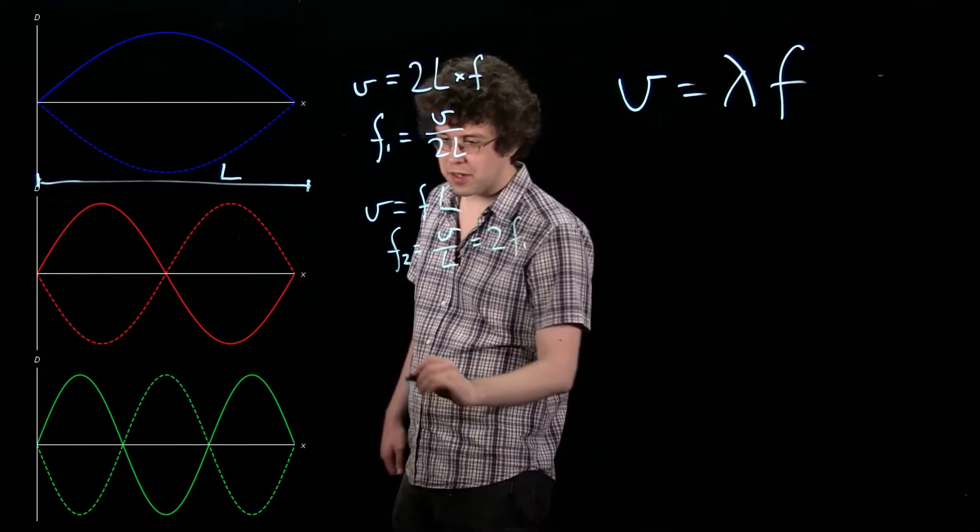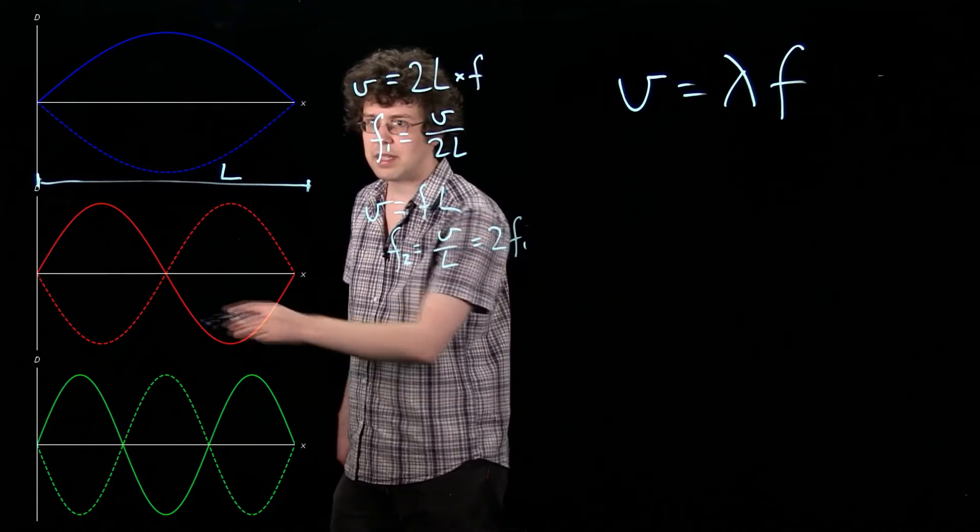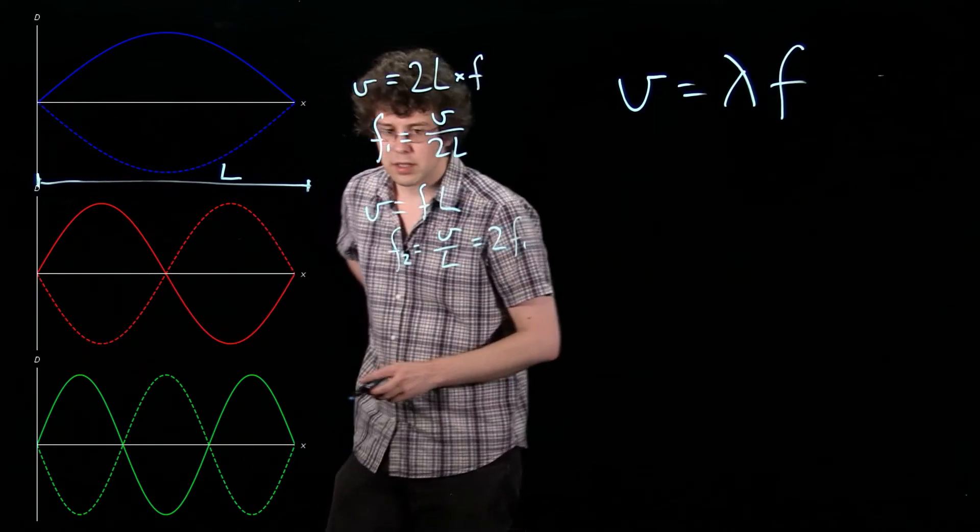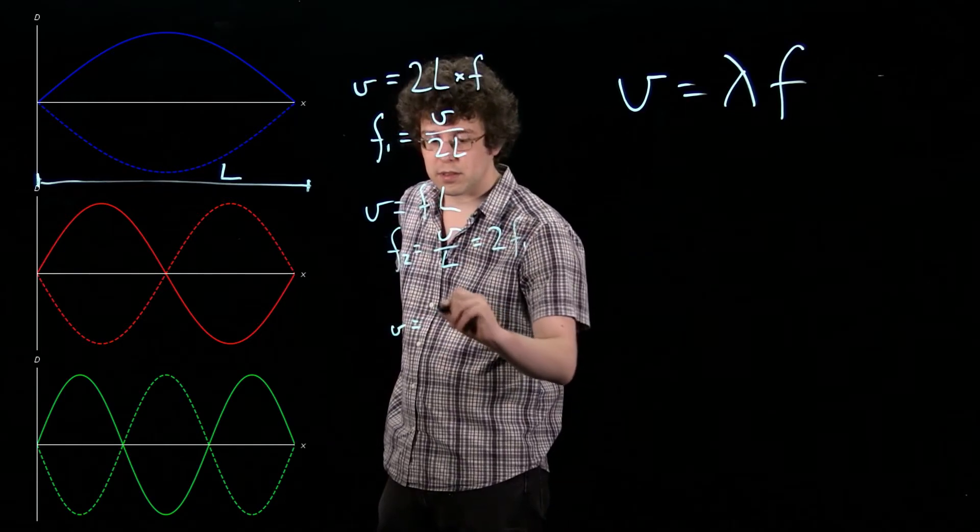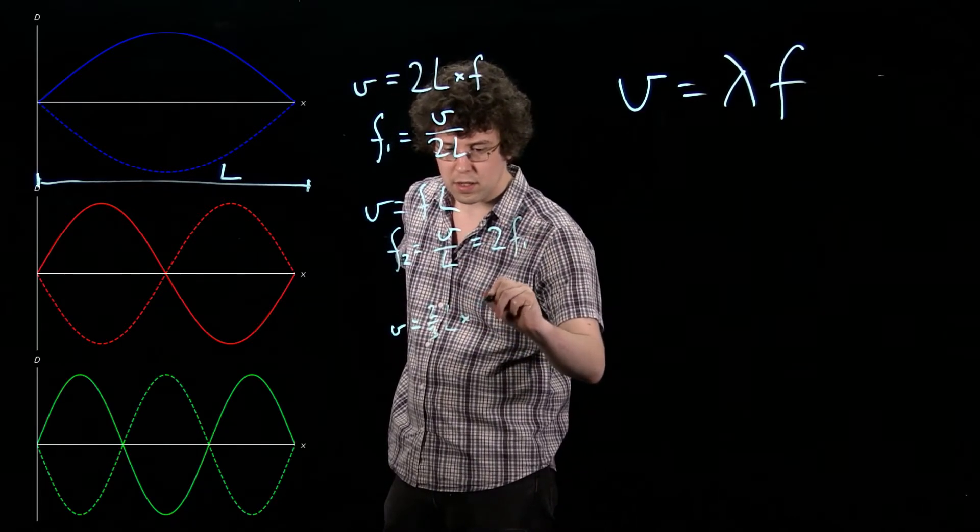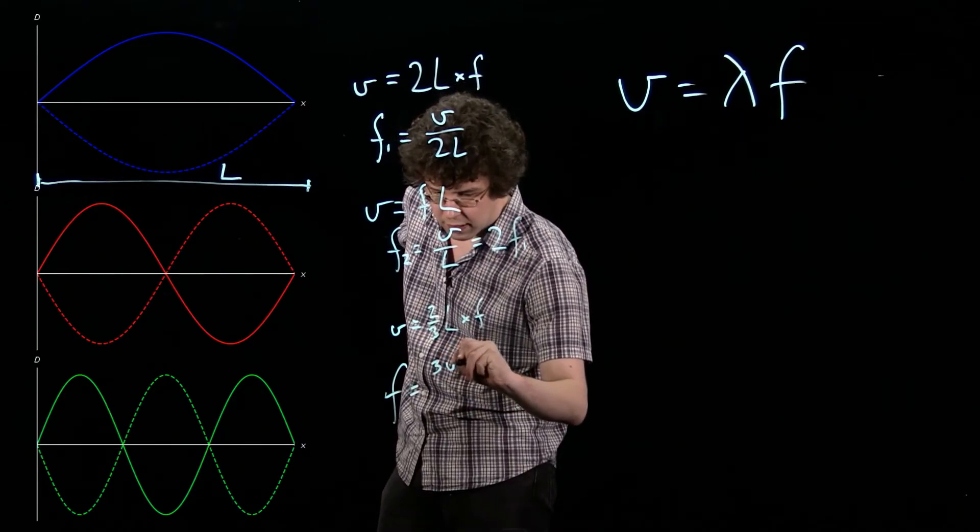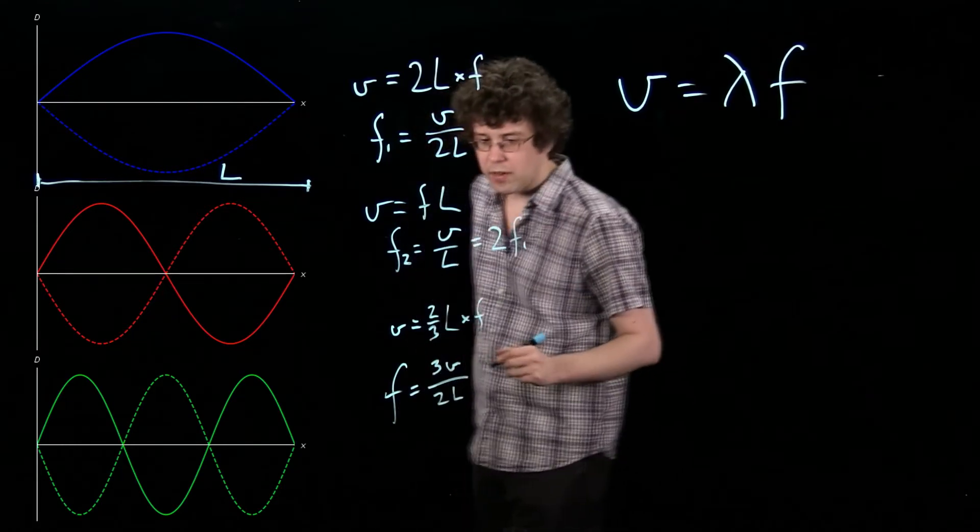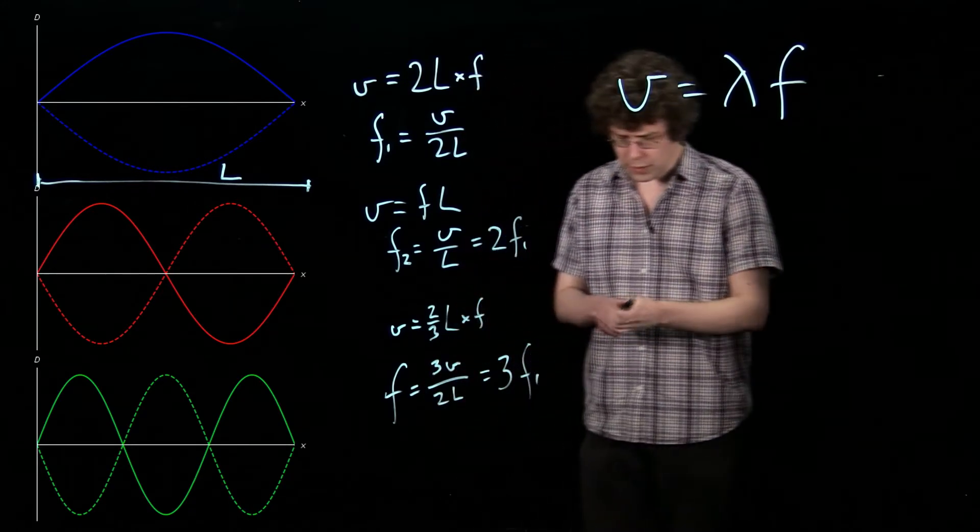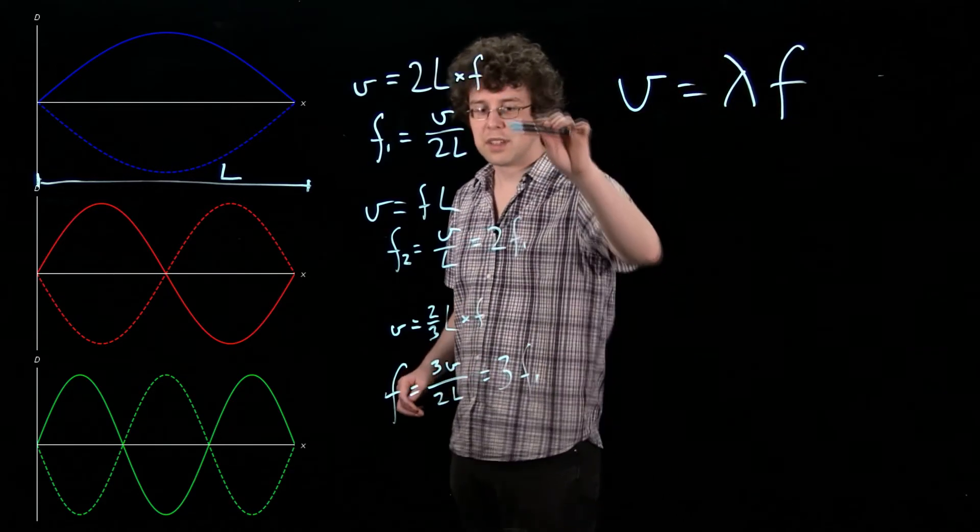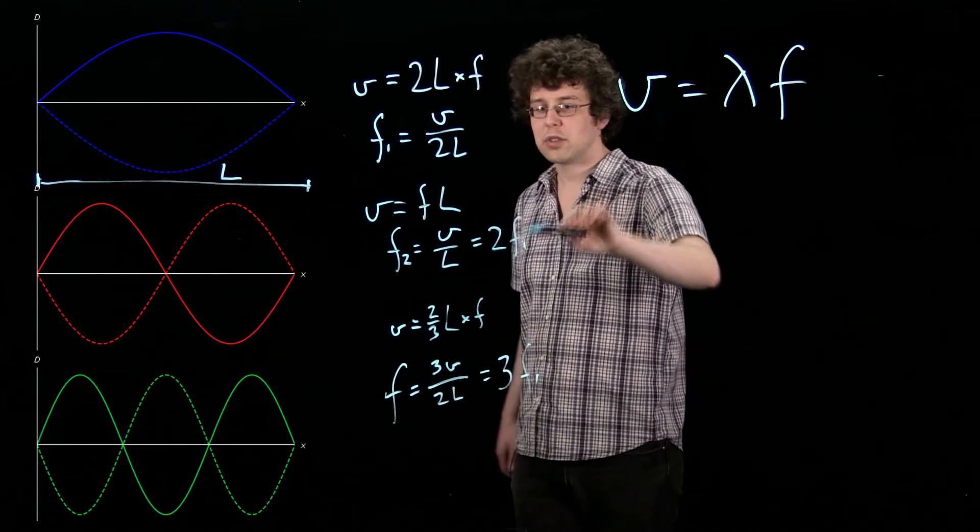And if we take this further, the third case, we can see here our wavelength is, well, we have three oscillations, three peaks in one and a half wavelengths in L. So lambda is two thirds L. V equals two thirds L times our frequency. Rearrange this. We find our frequency equals three halves v on L, which is three times f1. So we can see here we've got a relationship between each of our higher modes of oscillation is proportional, is just an integer multiple of our initial frequency.